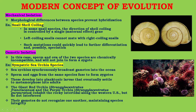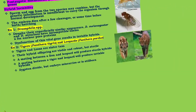Next is gametic isolation: the sperm and ova of the two species are chemically incompatible and will not join to form a zygote. For example, sympatric sea urchin species. Sea urchins synchronously broadcast gametes into the ocean; sperm and eggs from the same species fuse to form zygotes, which develop into planktonic larvae that eventually settle and metamorphose into adults. The giant red urchin Strongylocentrotus franciscanus and the purple urchin Strongylocentrotus purpuratus cohabit rocky intertidal zones along the western US but do not interbreed — their gametes do not recognize one another, maintaining species integrity.